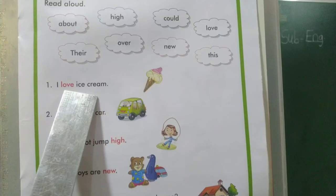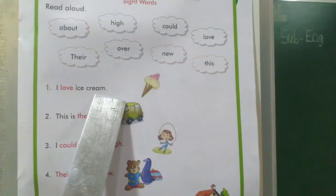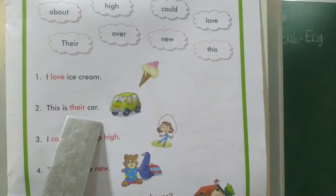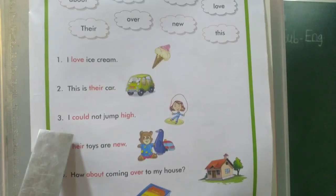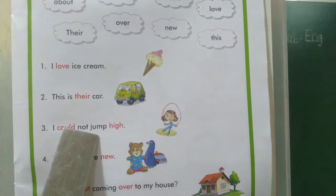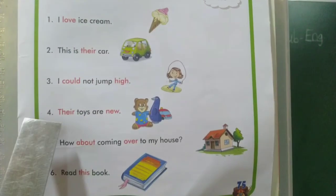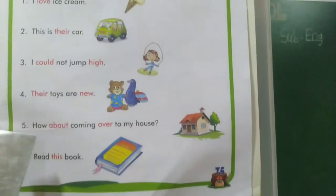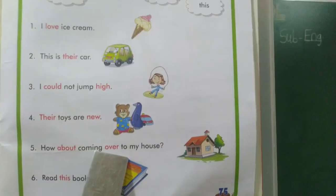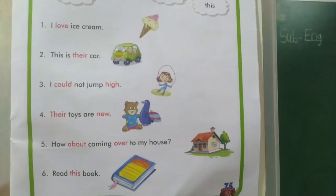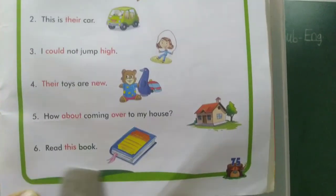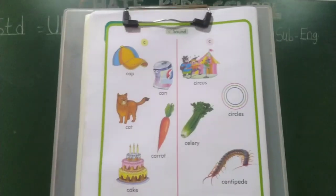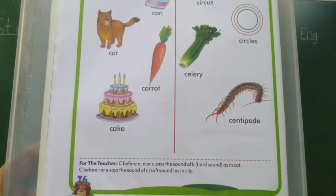I repeat these sentences, you say after me: I love ice cream. This is their car. I could not jump high. Their toys are new. How about coming over to my house? Read this book.